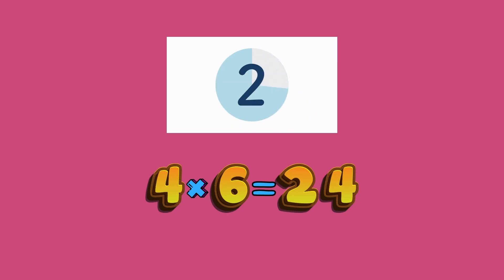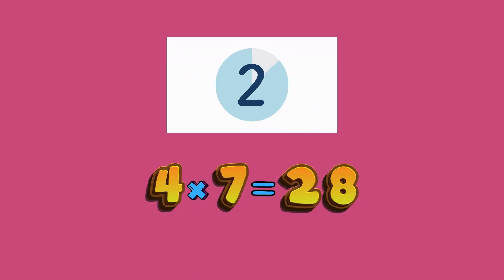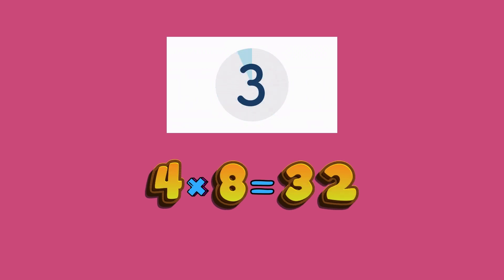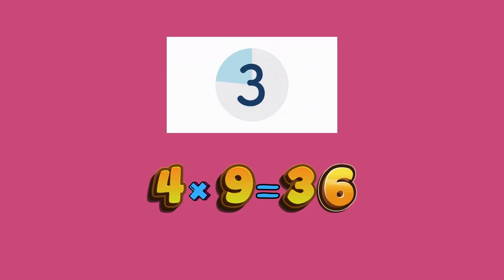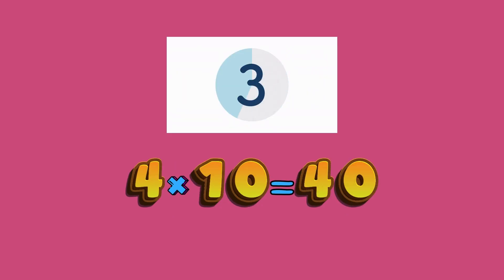4 times 6 equals what, friends? 24. 4 times 7 equals what, friends? 28 — good job! 4 times 8 equals what? 32. 4 times 9 is what, friends? 36 — good job! 4 times 10 equals what, friends? 40 — good job!